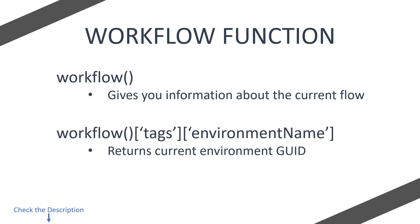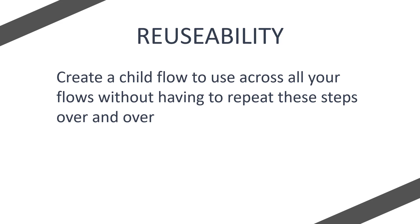Let's talk about reusability. If you're going to use this in multiple flows, you can simply create a child flow so that you can access the code we've created and return it to any flow without having to repeat these steps and actions every time — you just call the child flow and have the information returned. We'll look at that after the live demo of getting the workflow information and environment information.